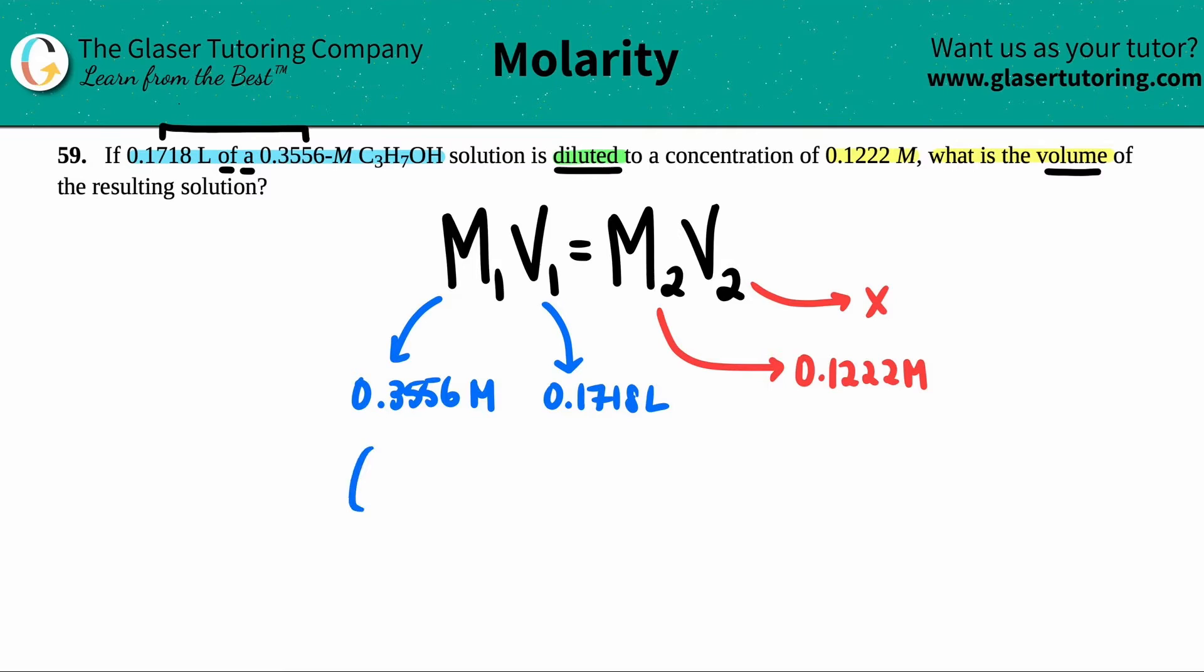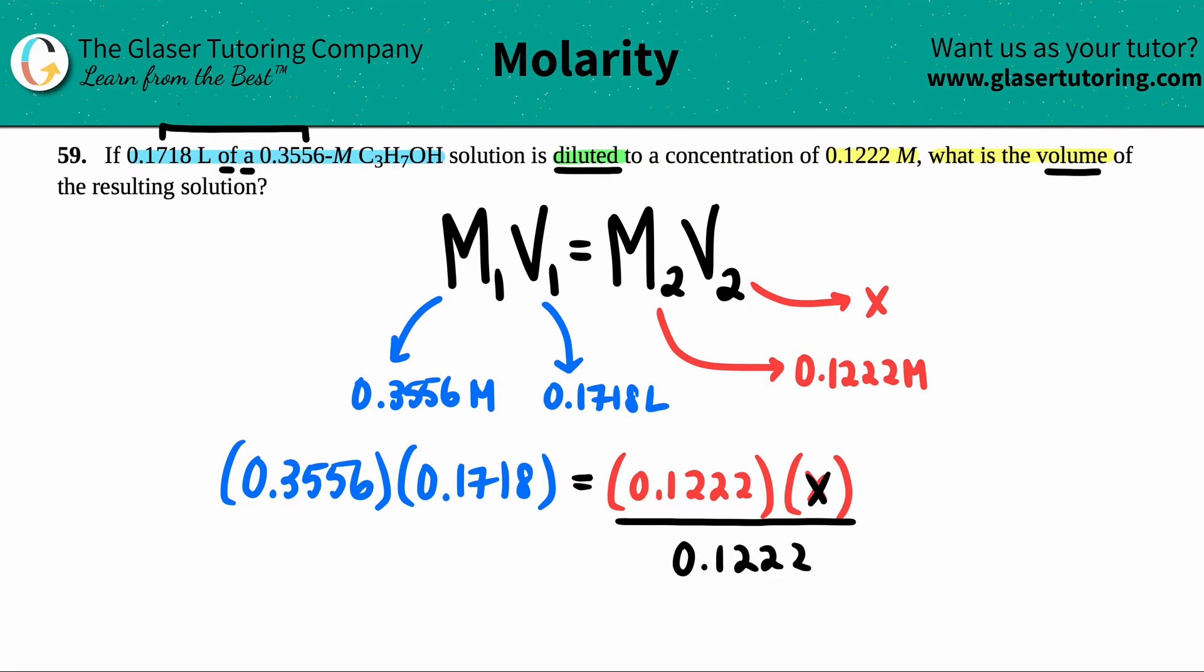So let's set this up. It would be 0.3556, that's the M1, times 0.1718, that's V1. And maybe I will put this on this side. And this all equals M2V2. We know what the M is. And now we just have to solve for V, which is X. If we want to solve for X, all we have to do is get X by itself. I got to divide by 0.1222 on both sides.